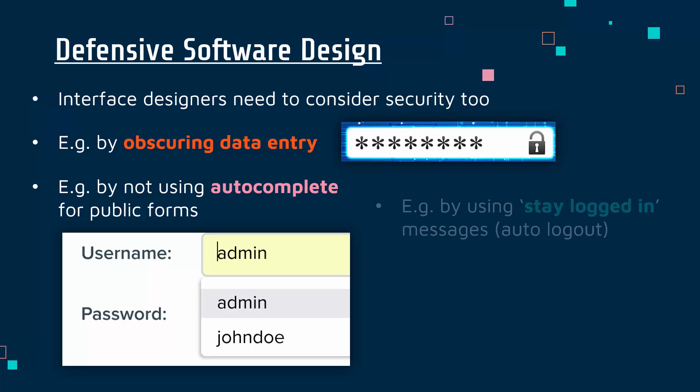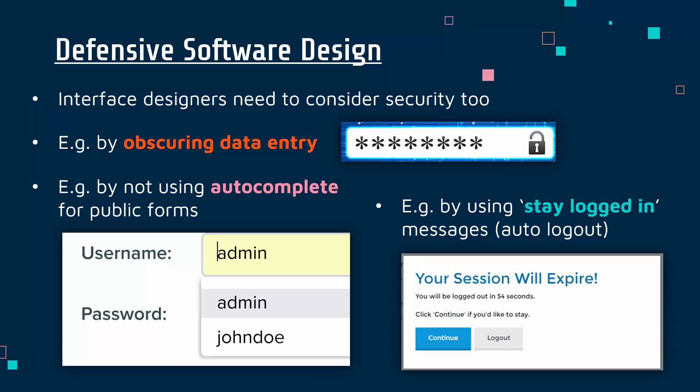A third defensive design feature is what you might call stay-logged-in messages, where you get a message saying something like 'your session will expire — click to avoid getting logged out' or 'click continue if you'd like to stay logged in.' The point of this is that the website or application will log you out automatically unless you show you are available. This is to avoid people leaving a computer unattended — maybe in a public space — where an attacker could come in and use their computer without them realizing. These features reduce that risk by logging you out unless you are actively using the software or website.